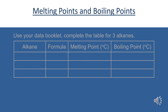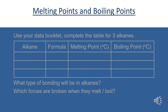We will firstly have a look at the melting and boiling points of alkanes. Use your databook to take a couple of minutes to complete the table for any three alkanes — write the name of the alkane, the formula, the melting point, and the boiling point. After you've done this, have a think about what type of bonding is in alkanes, what forces are broken when they melt or boil, and what relationship can you see?